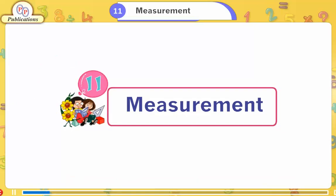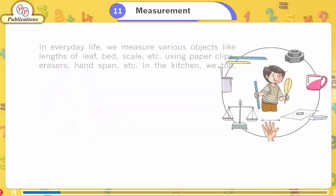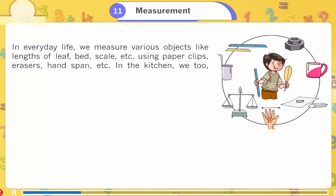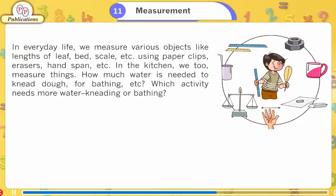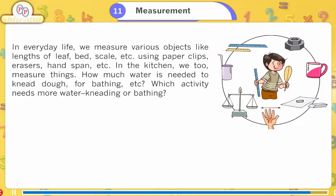Lesson 11: Measurement in Everyday Life. We measure various objects like length of a leaf, bed, scale, etc., using paper clips, erasers, hand span, etc. In the kitchen, we measure things like how much water is needed to knead dough, or for bathing. Which activity needs more water — kneading or bathing?